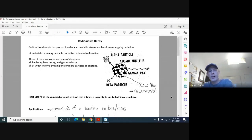Now radioactive decay is the process by which an unstable atomic nucleus loses energy, so that's why we're looking at this, by what's called radiation. Now a material containing an unstable nucleus is considered radioactive. The three most common types of decay are alpha decay, beta decay, and gamma decay, all of which involve emitting one or more particles or what's called photons.